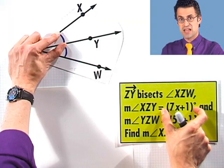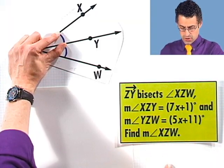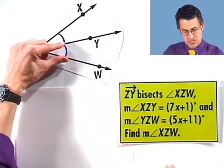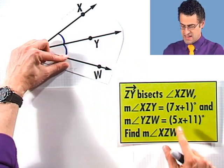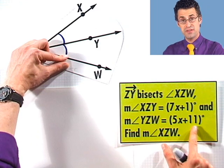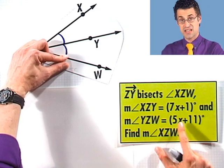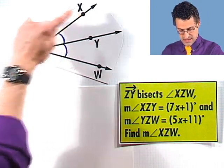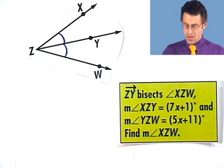We just understand that that represents that angle. We're also told that the measure of angle YZW, so that angle right there, has measure 5X plus 11 degrees. Again, there's that same X, but let's not worry. The question is, what is the measure of angle XZW?